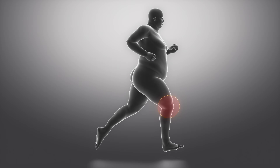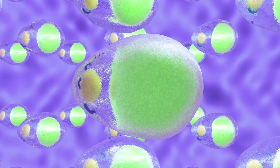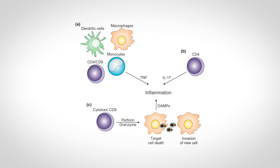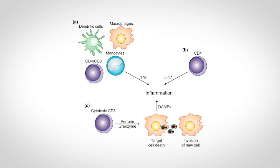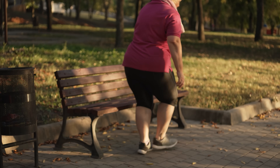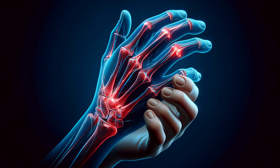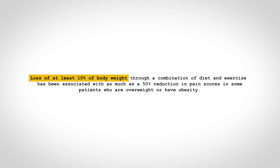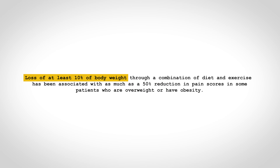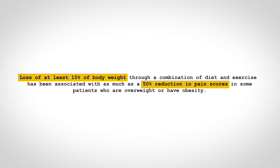Another way to help reduce the risk of developing osteoarthritis and to help treat it is to maintain a healthy weight. Excess weight adds mechanical stress and load to the knee joint, but there's also growing evidence for a metabolic contribution — excess adipose tissue can be a source of pro-inflammatory cytokines. These cytokines can promote a low-grade systemic pro-inflammatory state that contributes to osteoarthritis development, which explains why body weight is a risk factor not only in weight-bearing joints like the knee and hip, but also in the hand. Loss of at least 10% of body weight through diet and exercise has been associated with as much as a 50% reduction in pain scores in some overweight patients.